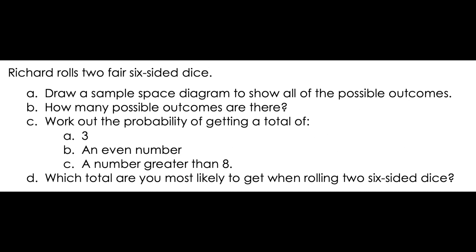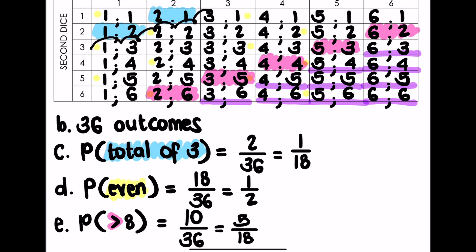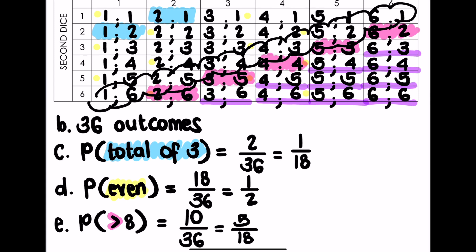The last question: which total are you most likely to get when rolling two six-sided dice? You can see that the totals work in diagonals. The first diagonal gives two; the next diagonal gives three and three; the next gives four, four, four, and so on. The biggest diagonal across the diagram gives us the most likely total — which would be seven.